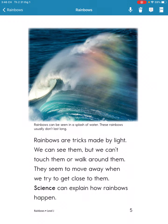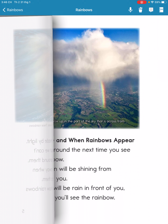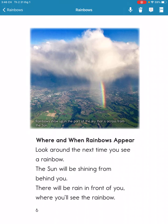Science can explain how rainbows happen. Look around the next time you see a rainbow — the sun will be shining from behind you.